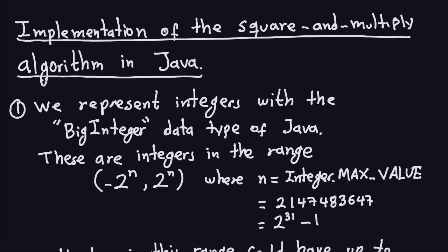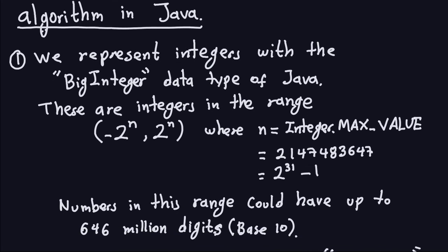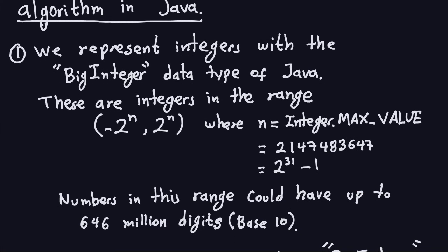BigInteger covers integers in the range minus 2^n to 2^n, where that exponent n is the maximum value of Java's integer type, which is 2^31 minus 1. So this range is really, really big — numbers can have up to 646 million digits in base 10. We need this because fast modular exponentiation is used to solve the exponentiation problem in the RSA algorithm, and those exponentiations involve very large numbers.